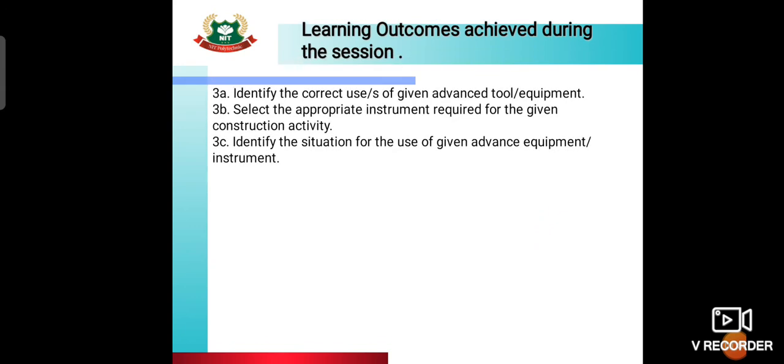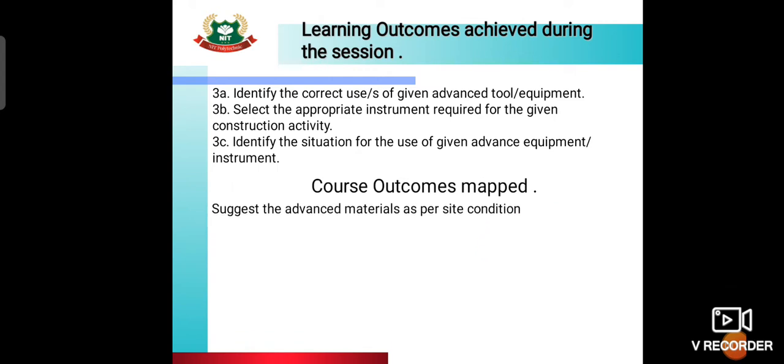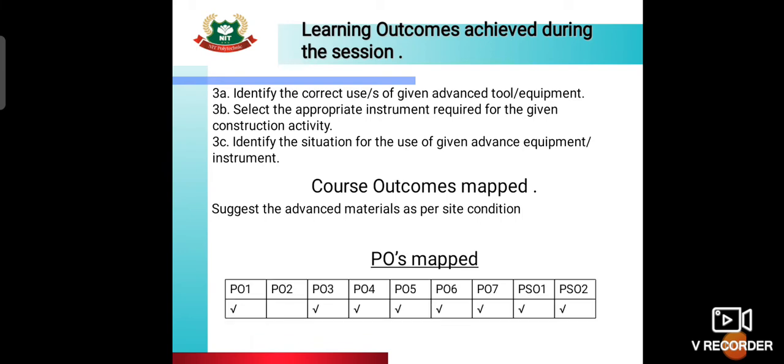The learning outcomes are: identify the correct use of given advanced tools and equipment, select the appropriate instrument required for a given construction activity, and identify the situation for the use of given advanced equipment. The course outcome mapped is to suggest advanced material as per site condition. Program outcomes covered are PO1, PO3, PO4, PO5, PO6, PO7, PSO1, and PSO2.